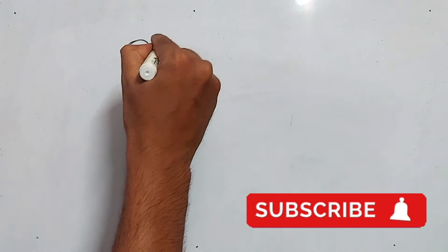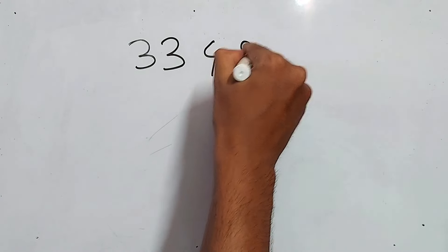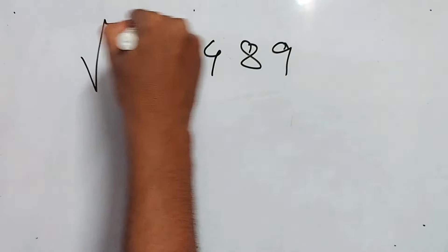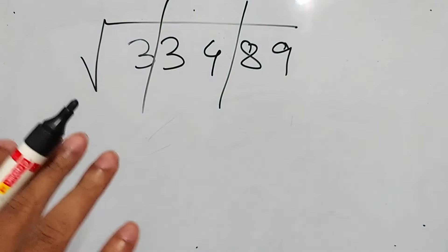So let's take a 5-digit number. Like 33,489. Now, how to split this? We know this. Always same thing.